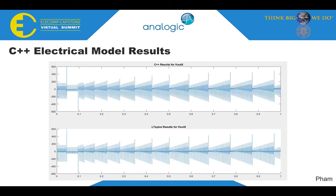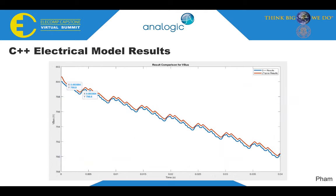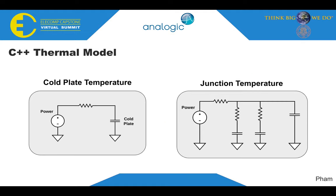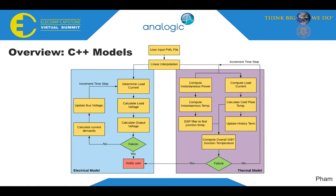What you can see here is a comparison of the C++ program values for output voltage against those from LTSpice. We also checked that the VBUS values were accurate, and the program does indeed detect expected failures within 10 milliseconds of the LTSpice. The process of developing the thermal model works similarly. From the circuitry modeling the cold plate temperature and the junction temperature, we put together an algorithm which could compute both values, add them, and then find the overall junction temperature. This is a plot of the output of both the C++ program and the LTSpice, and as you can see, they line up exactly. Putting all of this together, this is a flow chart describing the electrical and thermal models, outlining the process and how we determine the relevant values and detect potential failures.